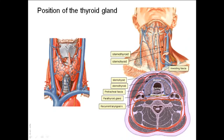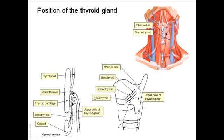Here you can see the thyroid gland with its isthmus and pyramidal lobe. The lower pole of the thyroid gland extends down to the level of the sixth tracheal ring, while the upper pole extends up to the level of the oblique line of the thyroid cartilage, where the sternothyroid muscle is attached. The upper pole cannot ascend above the level of the oblique line of the thyroid cartilage, so it is imprisoned there, as seen in this coronal section.